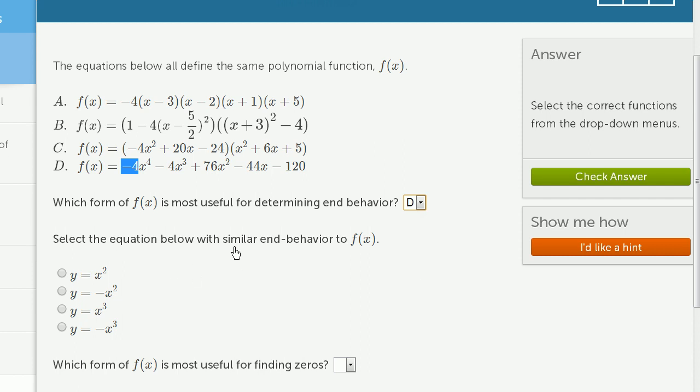Select the equation below with similar end behavior to f of x. Well, we already talked about it. It's an even degree, and we have a negative out in front of it. So it's going to have similar end behavior to y equals negative x squared.